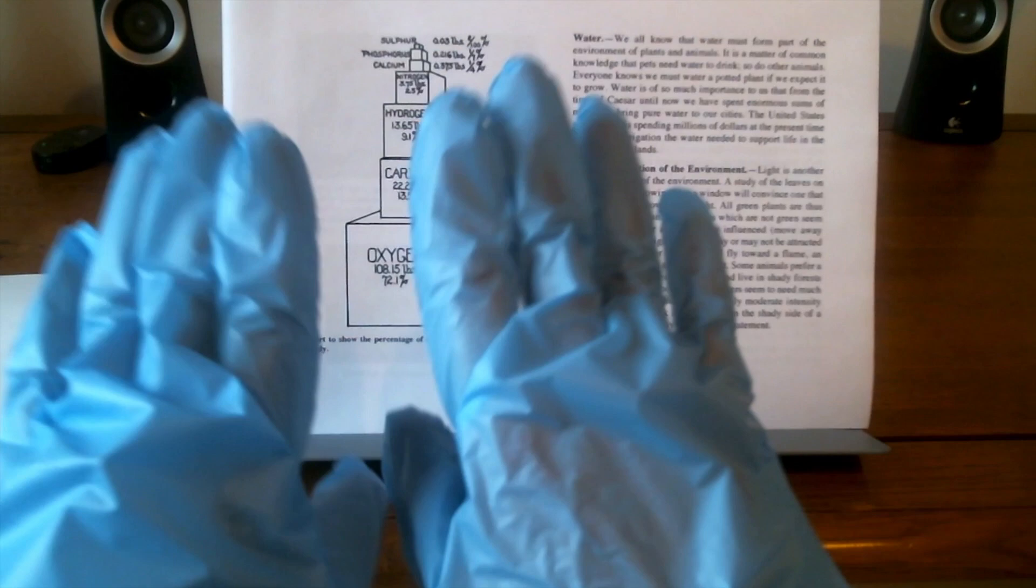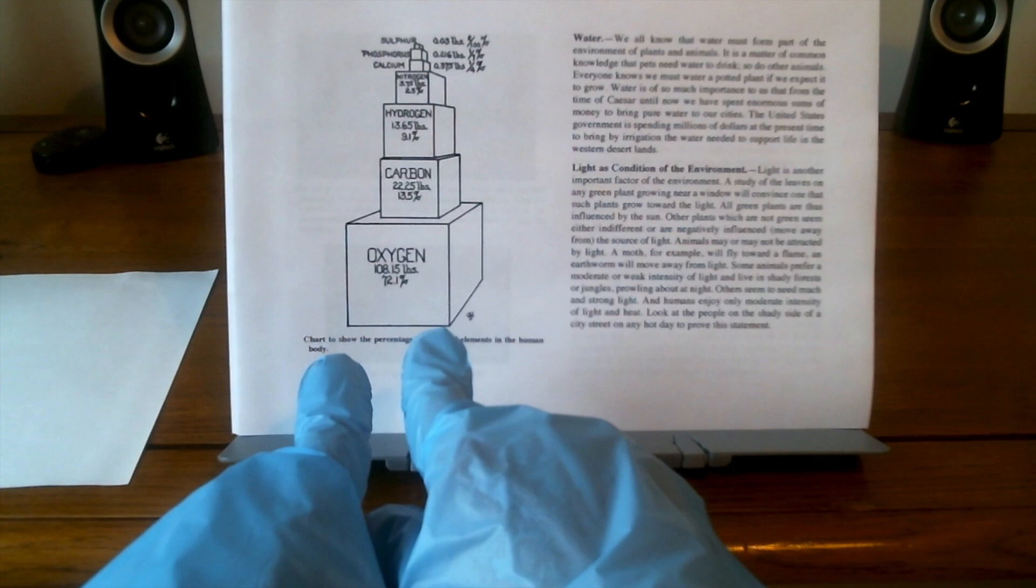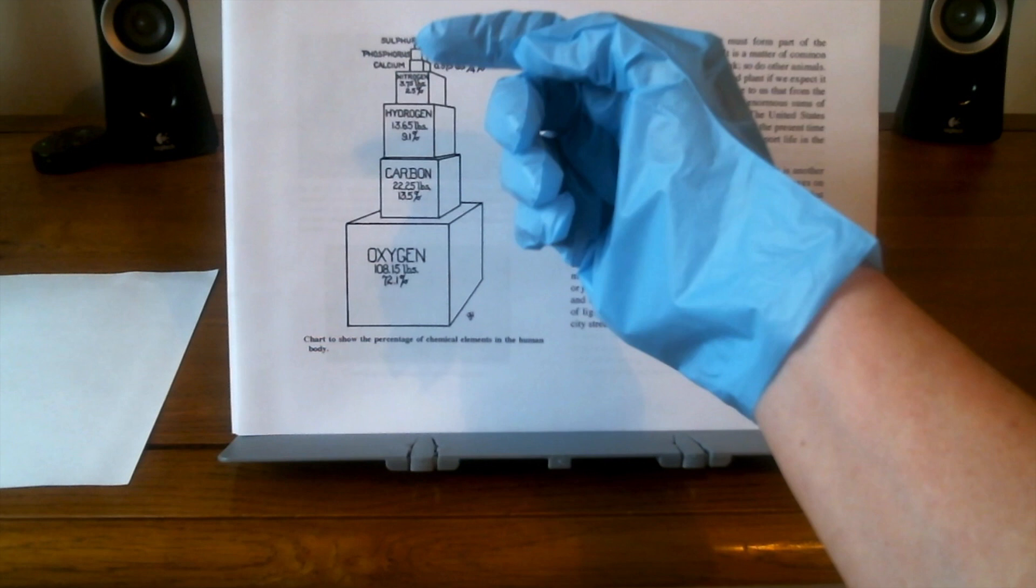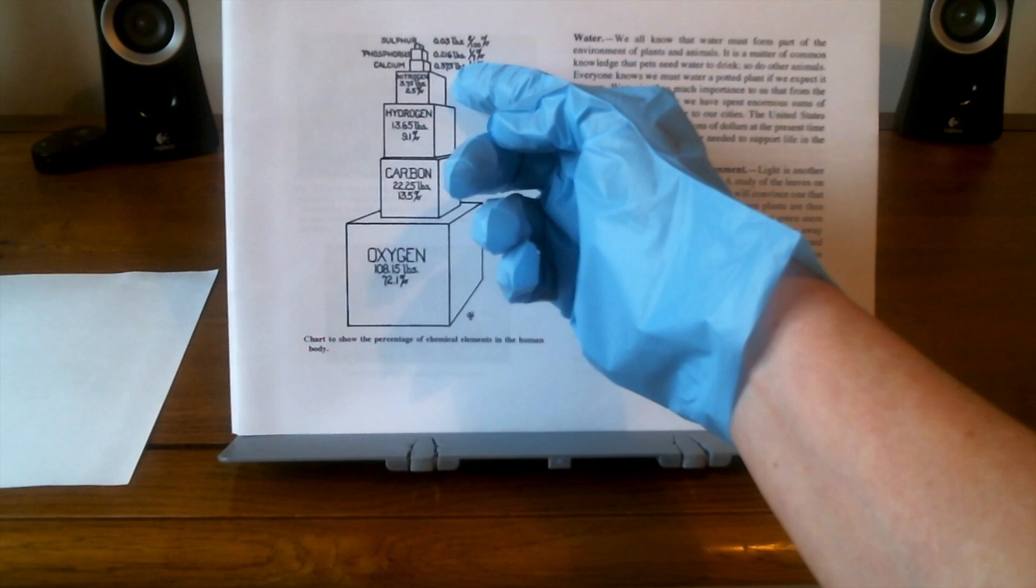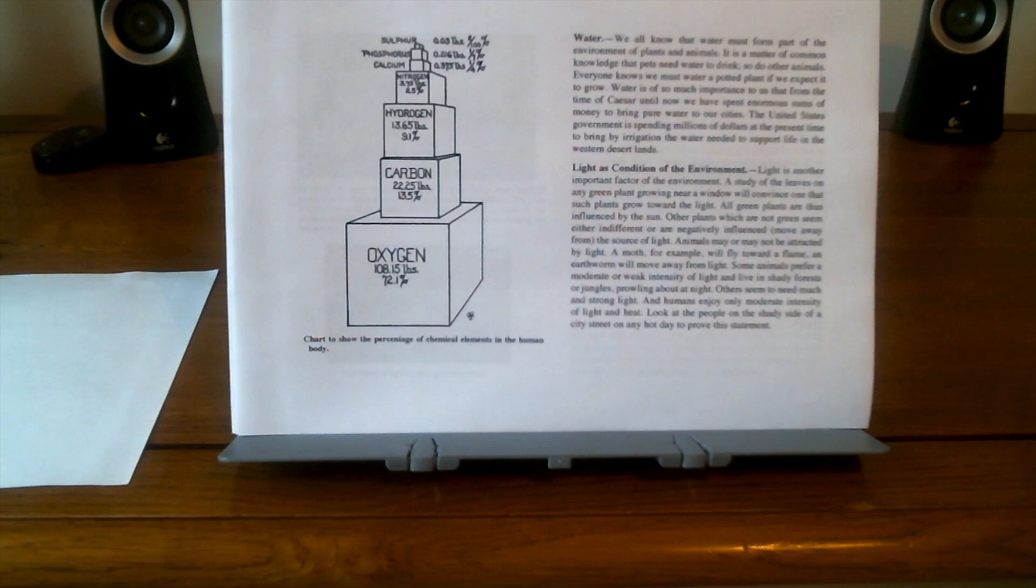Now, let's turn our attention to the illustration. This chart shows the percentage of chemical elements in the human body. Here we have 72.1% oxygen, 13.5% carbon, 9.1% hydrogen, 2.5% nitrogen, 1.25% calcium, 1.7% phosphorus, and two one-hundredths of a percent sulfur.